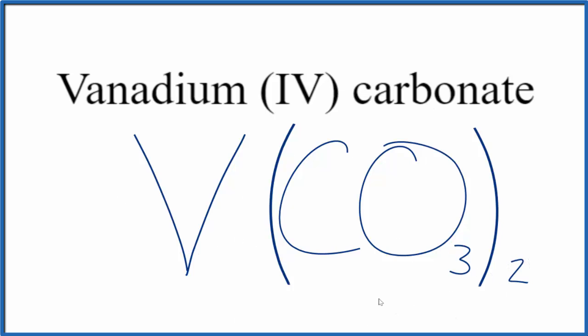If you are given this formula and asked to write the name, since you have two of these carbonate ions and each one is 2-, the vanadium is a transition metal so it has to be 4+, so we'll write that Roman numeral IV in the name.